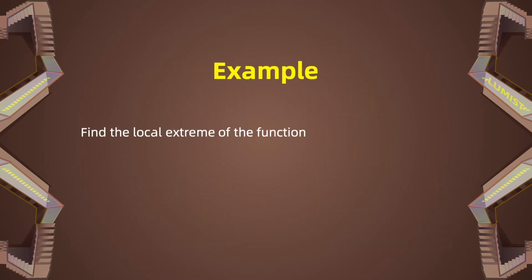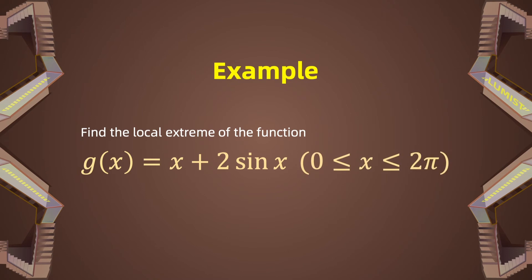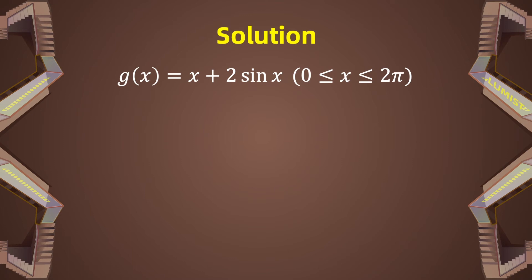For example, if you want to find all the local maximum and minimum values of the function g(x) where x is between 0 and 2π, before this video, you could approach this by using the local extreme value theorem. However, that theorem only helps you find where the maximum, minimum, or saddle point is, and you cannot determine which critical point is a local maximum and which is a local minimum. Now with the first derivative test, you can. First, differentiate the function and find g'(x) equal to 1 plus 2 cos(x).